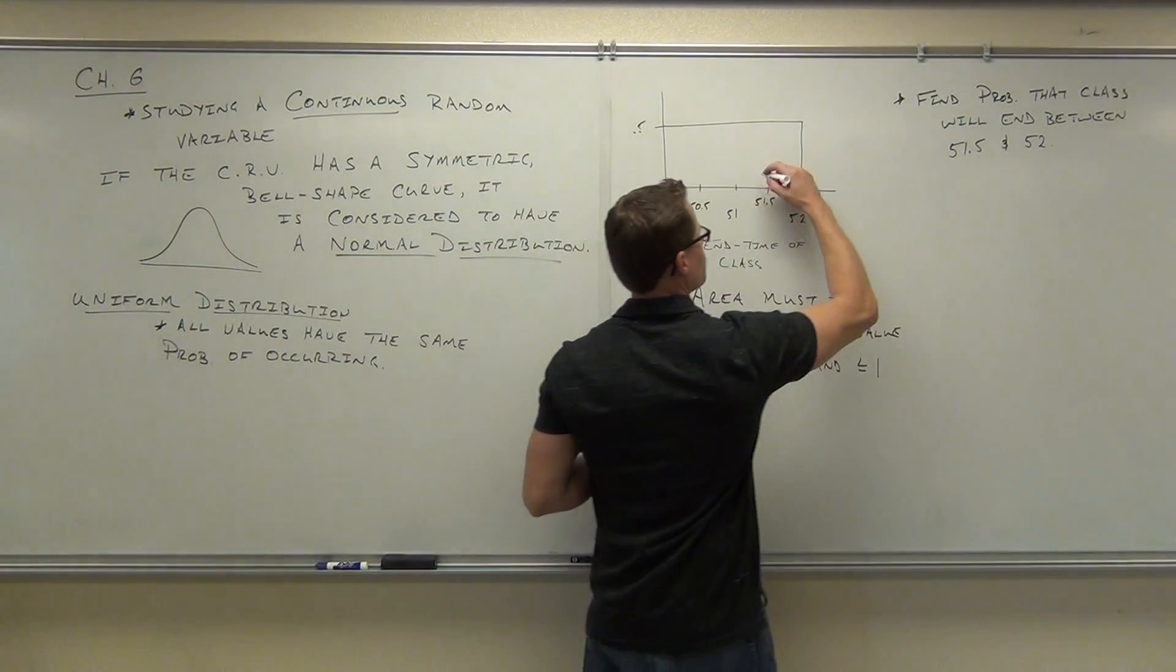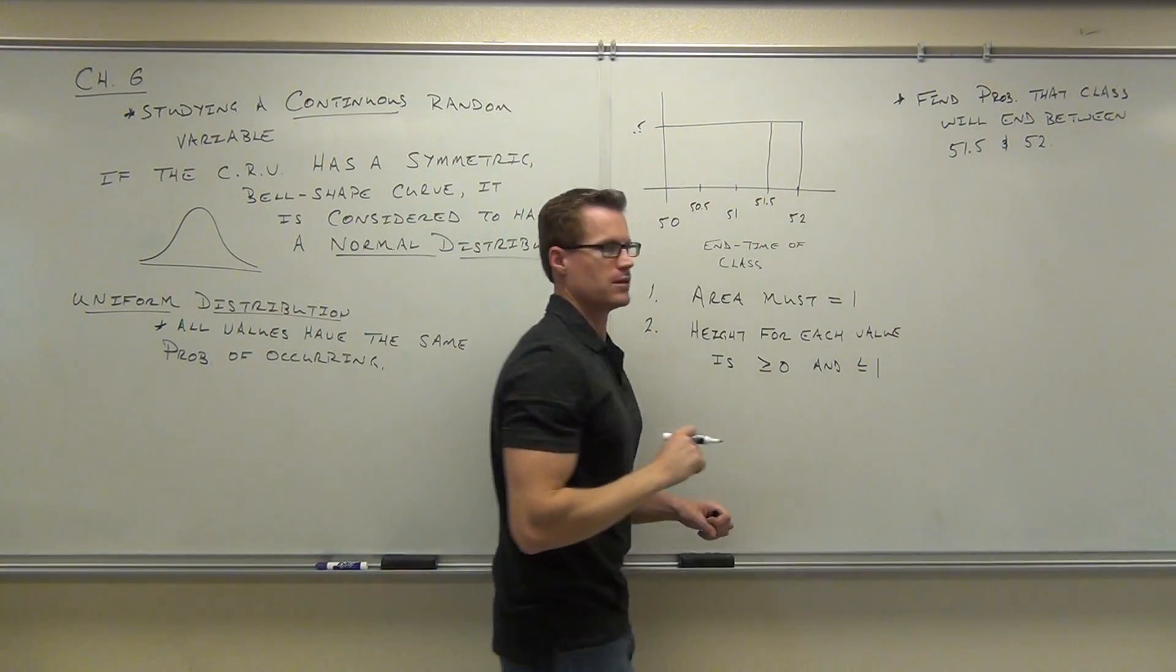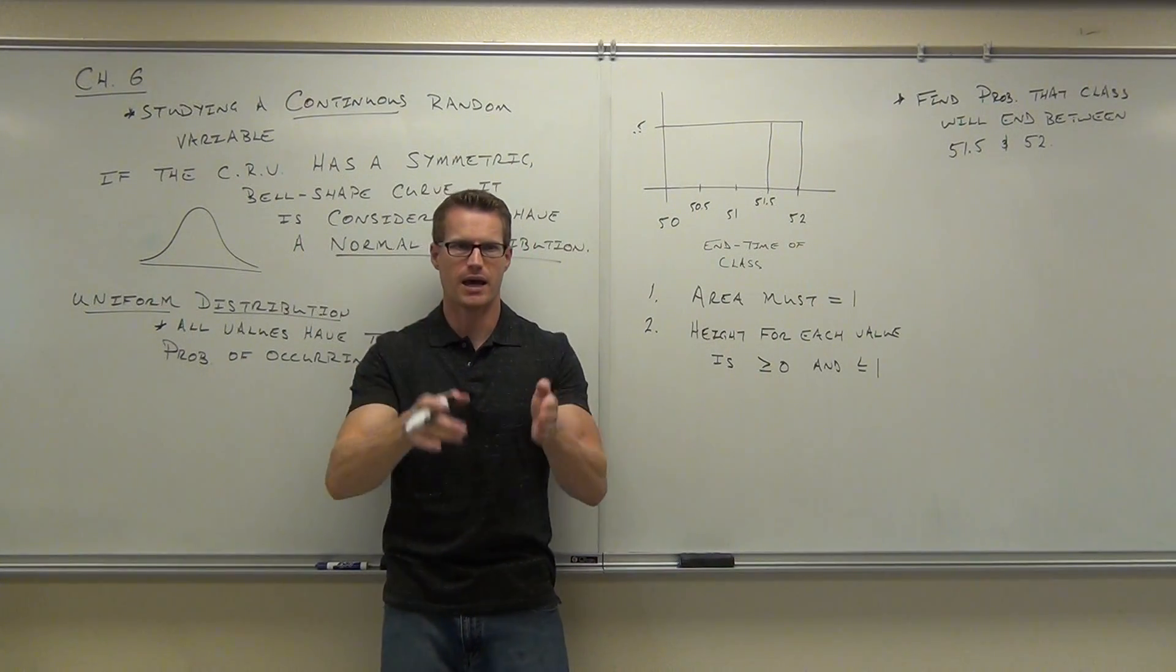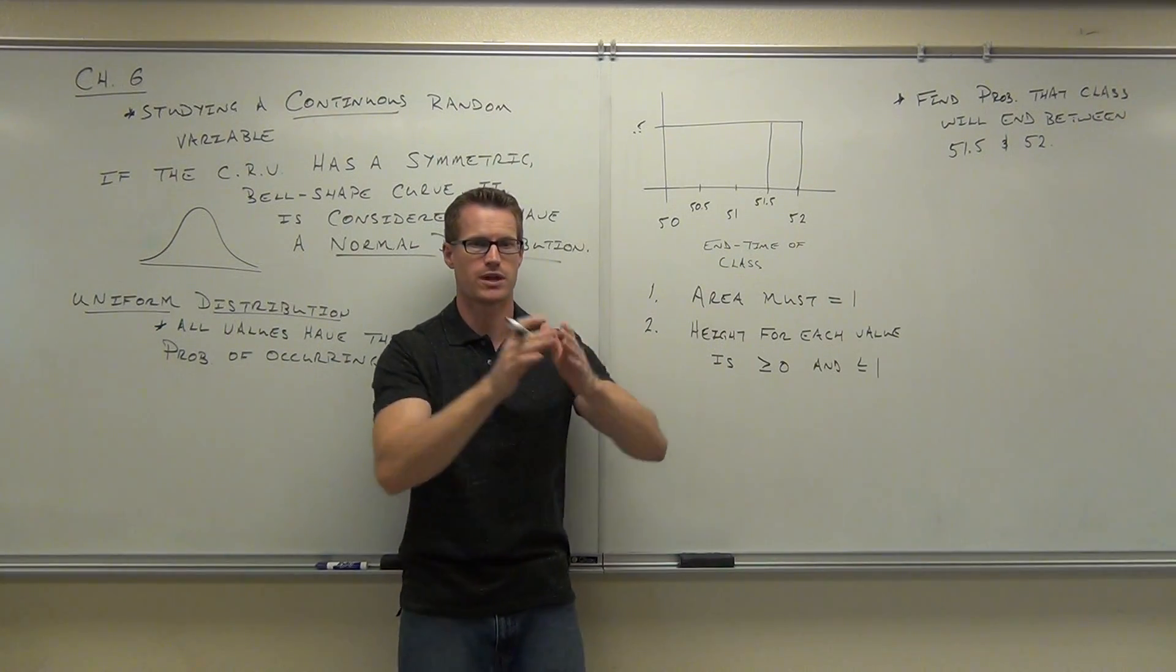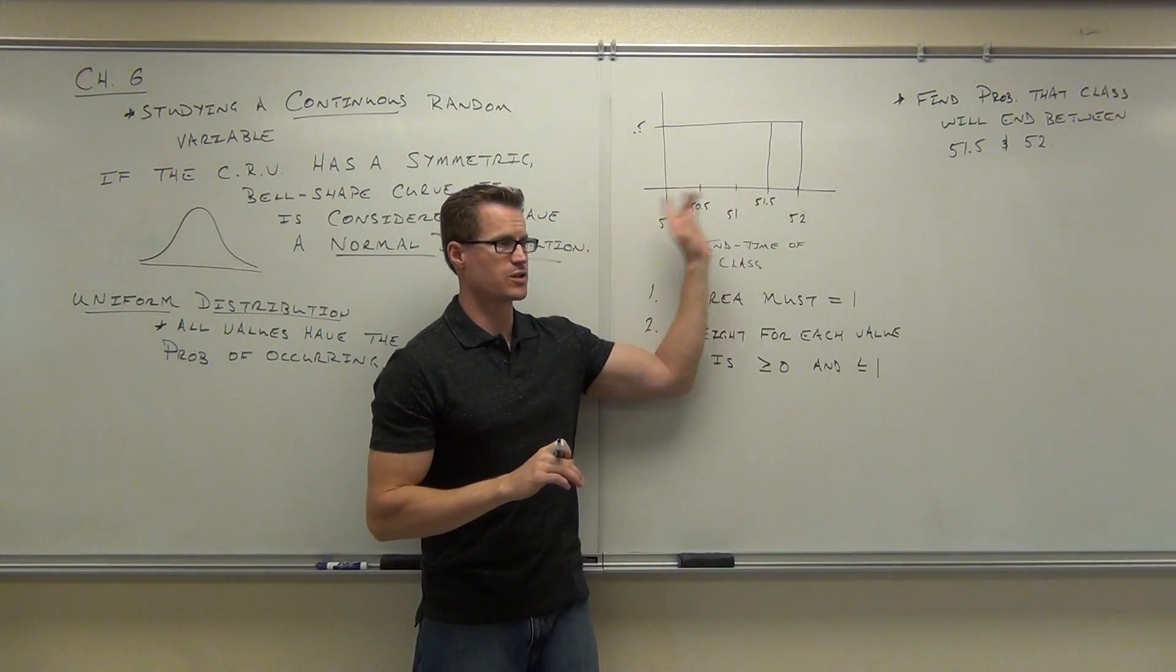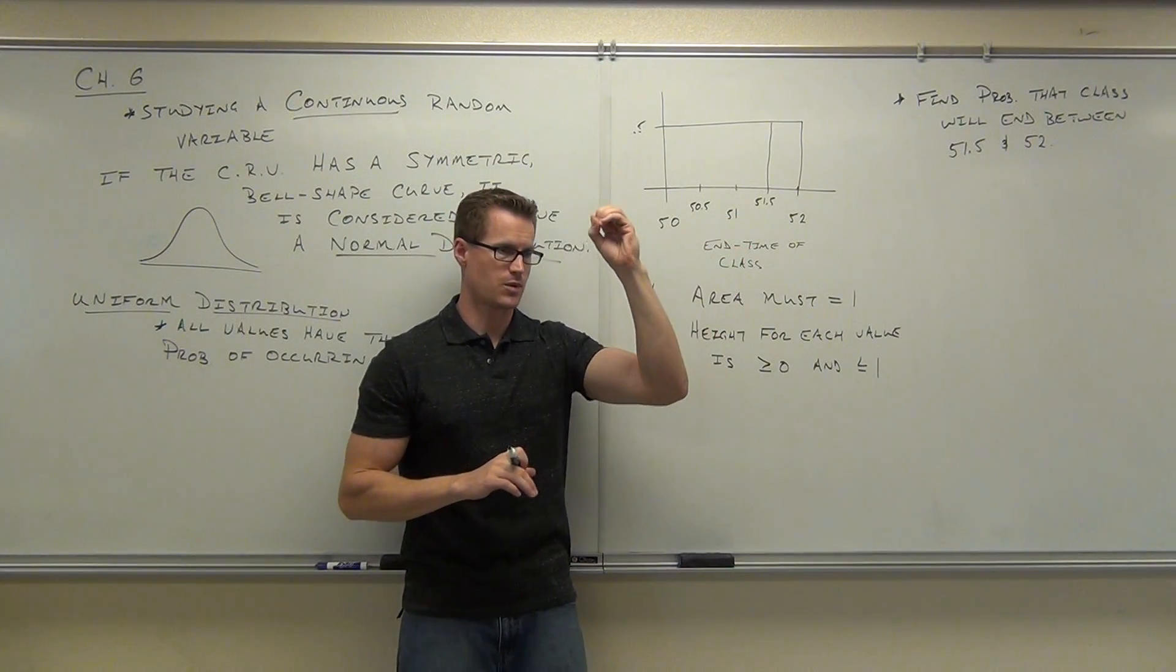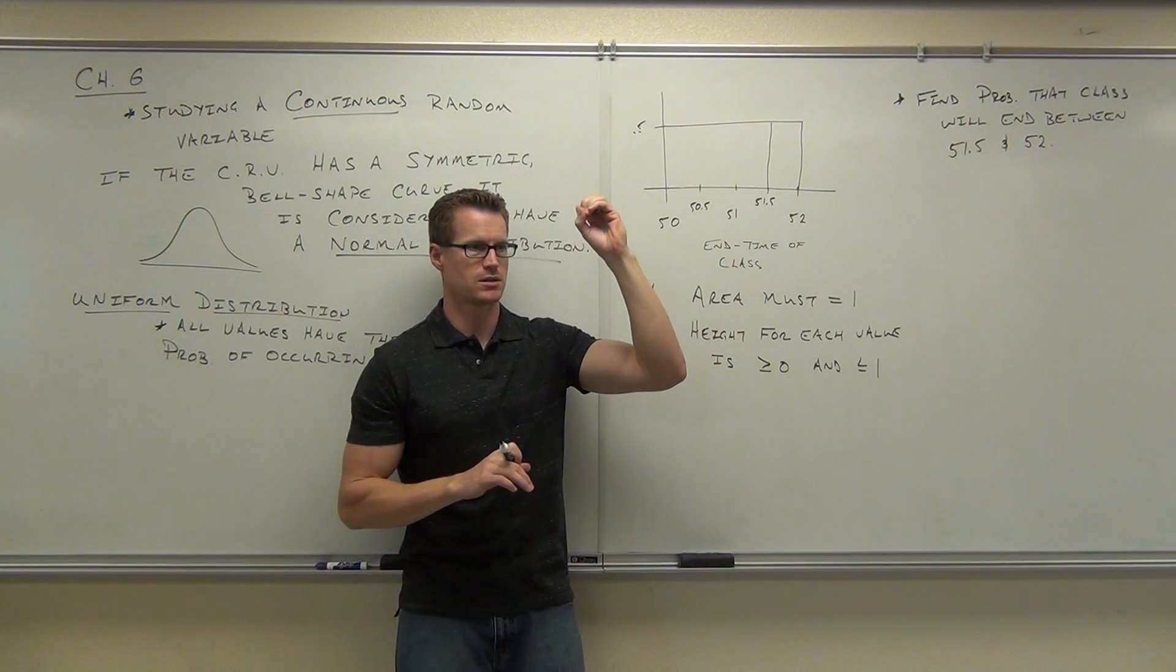One last time. What's the probability of the class ending at exactly 51.5? What's the probability the class will end right at 51.5000 for eternity? What's the probability of that happening? What's the probability of any single value occurring in a probability distribution with a continuous random variable? The probability of the single value is 0, nod your head if you're understanding that.